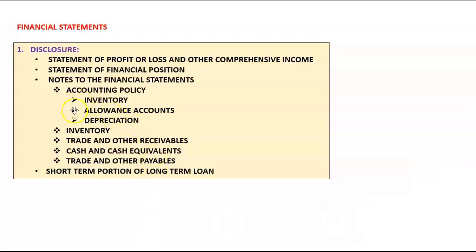If there is a policy for allowance for settlement discount accounts, mention that, and also mention the credit terms. For depreciation, tell the reader that non-current assets are recorded at cost less accumulated depreciation. Depreciation is calculated using whatever method applies. If there are different classes of assets, state that depreciation is calculated as follows — for example, land and buildings at 2% per annum straight-line, vehicles at 25% per annum reducing balance, and machinery on the production unit method. State the percentage where applicable.